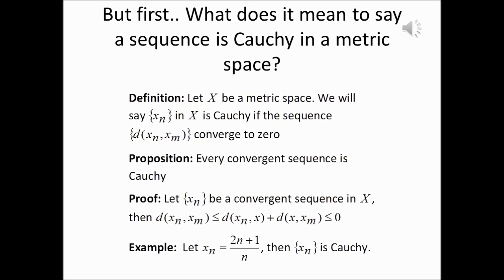Now let's look at an example of a sequence that is Cauchy. Assume that the n-th term of the sequence is defined by (2n + 1)/n. We want to show that this sequence is a Cauchy sequence. First of all, we're going to show that this sequence converges to 2.